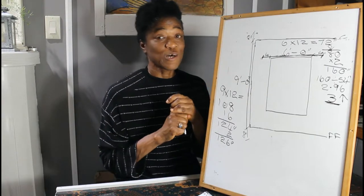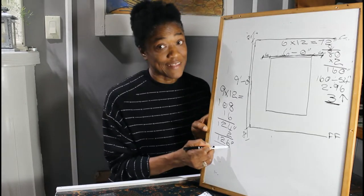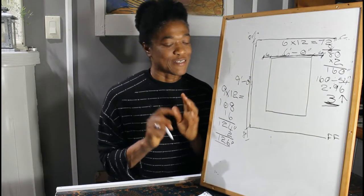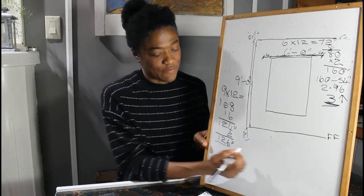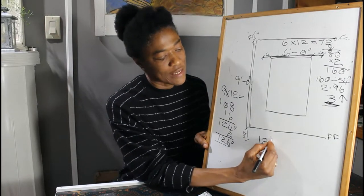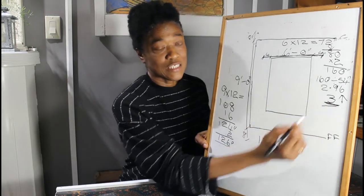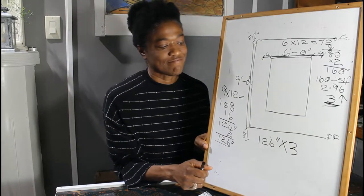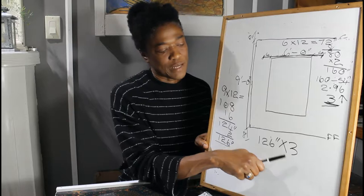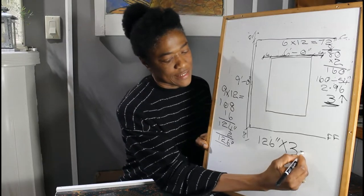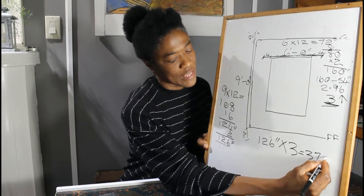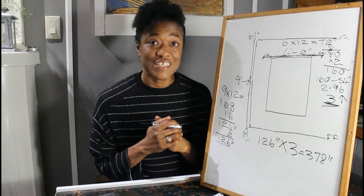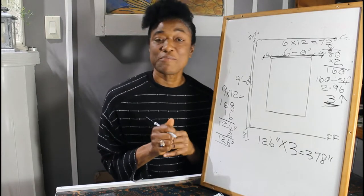So we need 126 inches, a piece of fabric that's 126 inches to cover from ceiling to floor. So what we have: the length of the fabric, and we have the number of widths that we need. The next step is to take the length of the fabric, which is 126 inches and multiply it by the number of widths that we need. 126 multiply by three, that is 378 inches. So we need 378 inches to make our drapery panels.